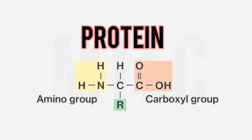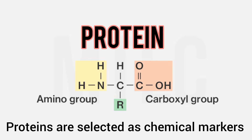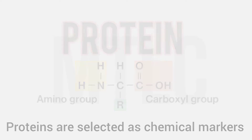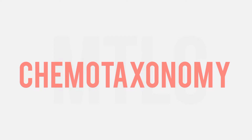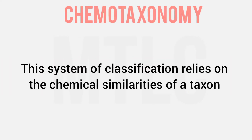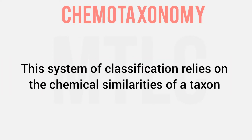Proteins are large complex molecules present in large quantities in a plant. If you analyze the protein, it will reveal taxonomic characters. In short, we can trace the plant's chemical characters.